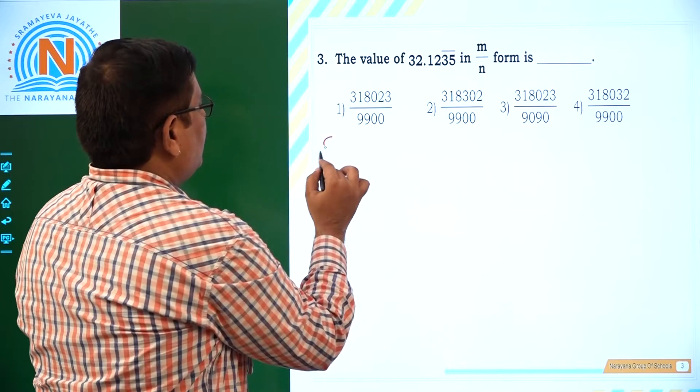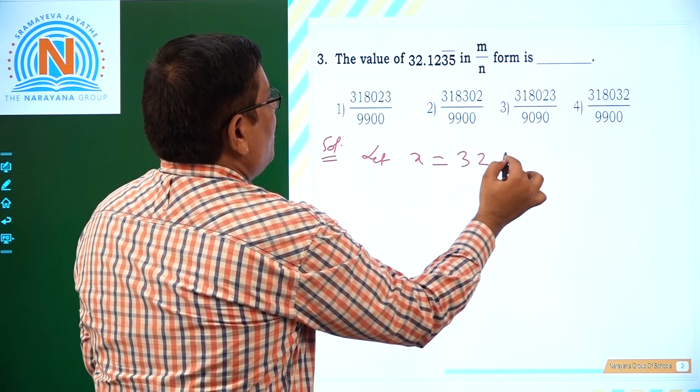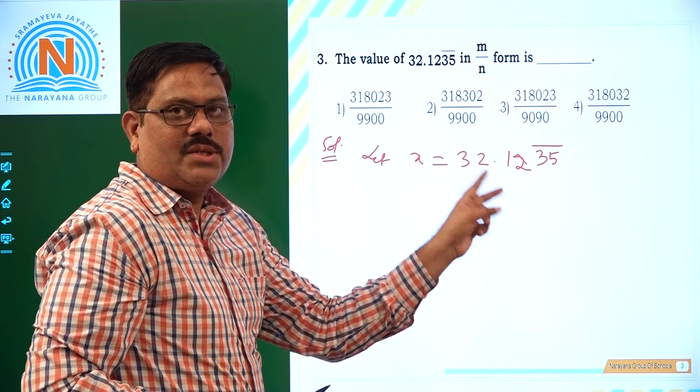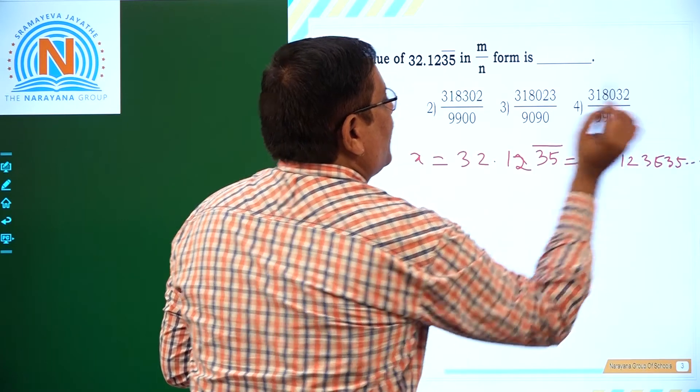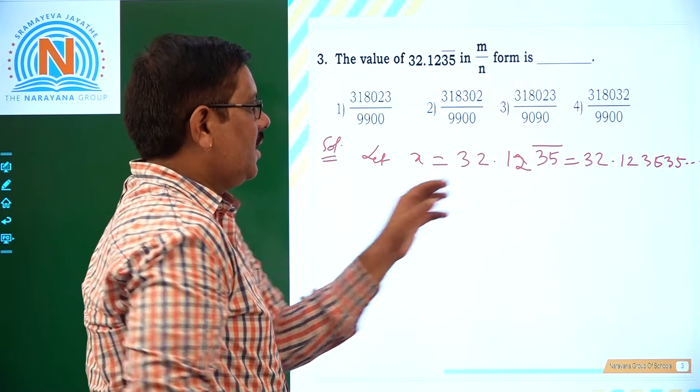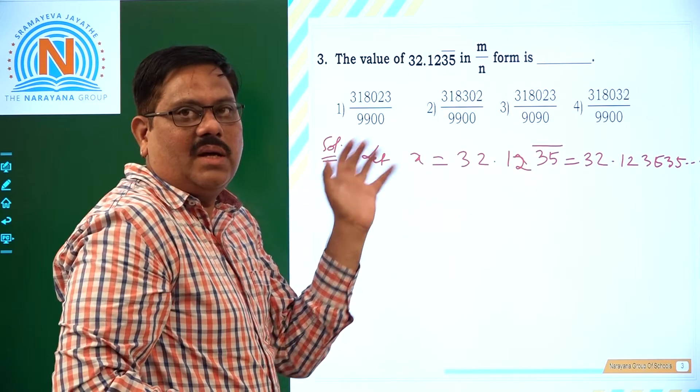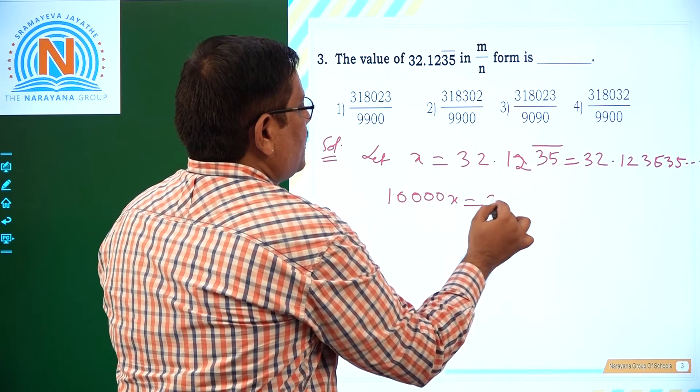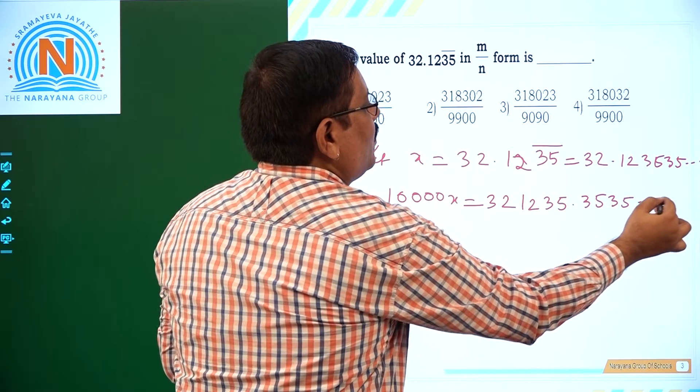The value of 32 point. Here also we have a decimal. That is, let x equal to 32.1235 bar. 3535 is recurring now. Period is 35. Periodicity is 2. That is nothing but 32.123535. It goes on like that. So what is the first step? Here we have to, already 32 is to the left of decimal. Nothing to do with that. Here we have 4 digits after the decimal. They have to be, we have to bring them to the left of decimal. So we have to multiply both sides with 10,000. That is 321235.3535.